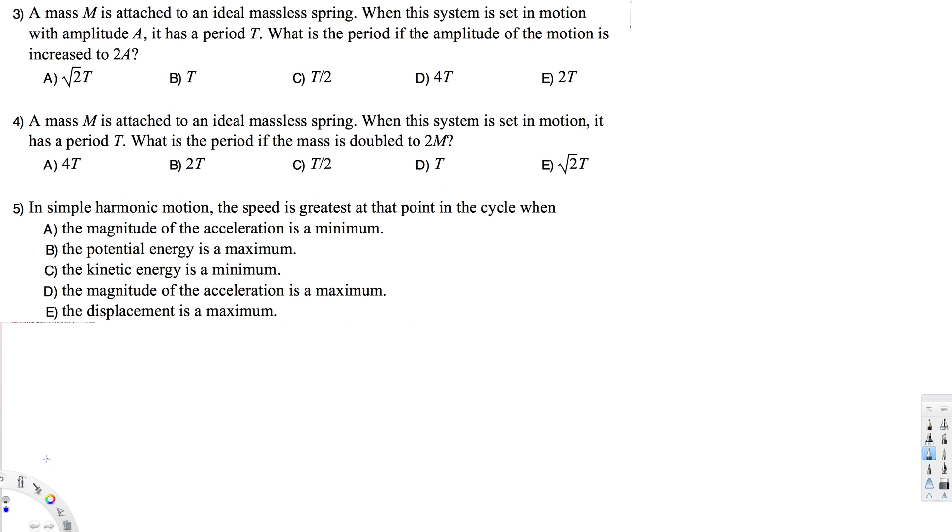Hi guys, let's do this problem. The first question asks: a mass M is attached to an ideal massless spring, and the system is set in motion with amplitude A and period T. What is the period if the amplitude is increased to 2A?